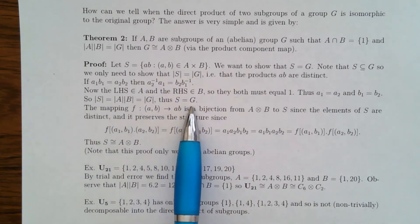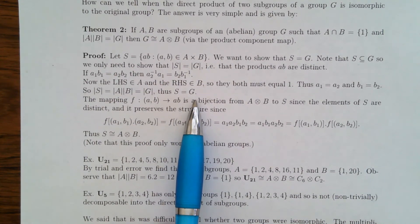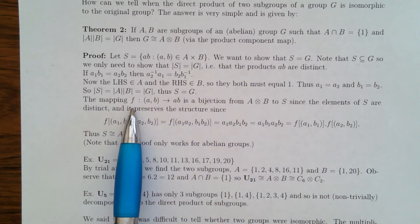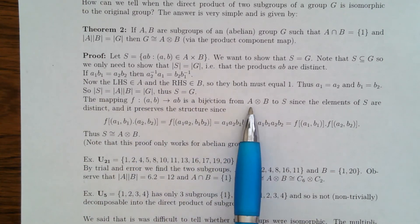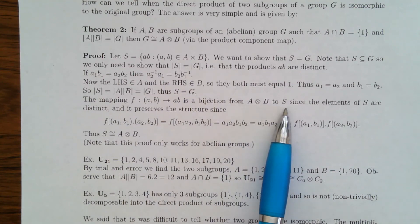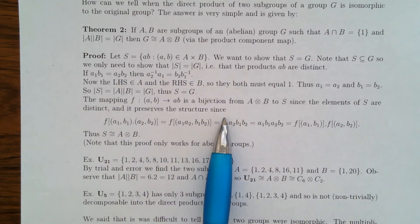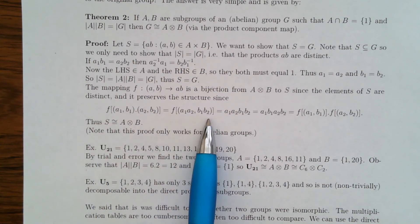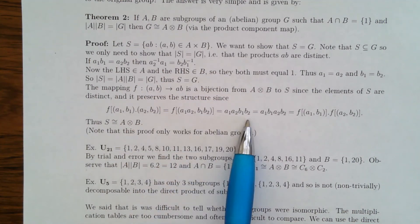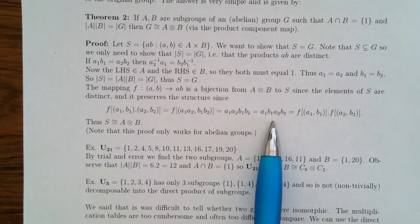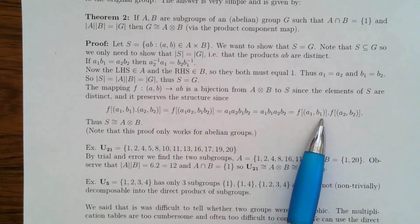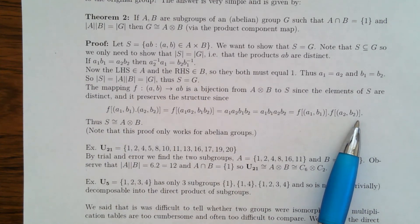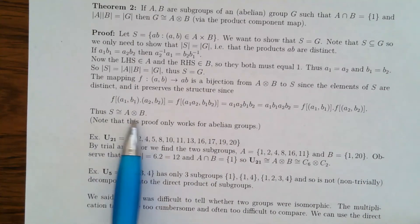The mapping φ: A ⊗ B → S sending (a,b) to ab is a bijection since the elements of S are distinct. It also preserves structure: φ((a_1,b_1)·(a_2,b_2)) = φ(a_1 a_2, b_1 b_2) = a_1 a_2 b_1 b_2 = a_1 b_1 a_2 b_2 (we can rearrange order because G is abelian) = φ(a_1,b_1)·φ(a_2,b_2). So φ is an isomorphism. Note this only works for abelian groups — you can't reorder elements in a general group.